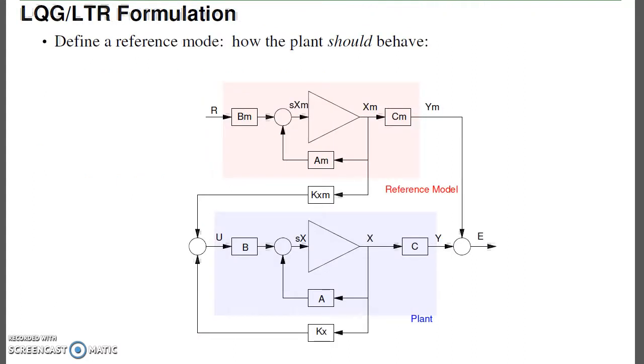The way this works is I have my plant, just like always: x dot equals ax plus bu, y equals cx. I now define a reference model. This is how I want the plant to behave.